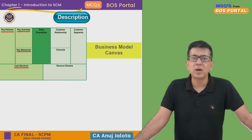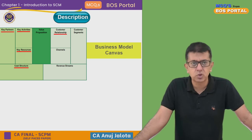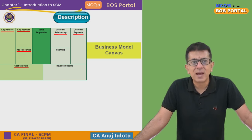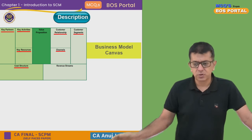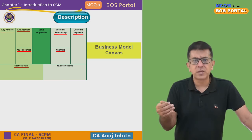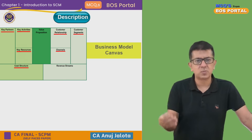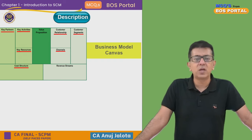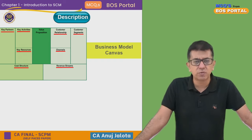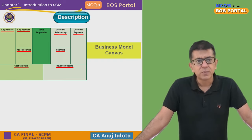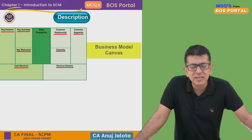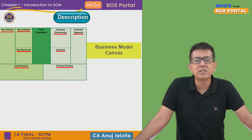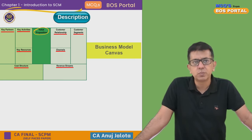On the right-hand side, you have things from the market outlook: customer relationships, customer segments, your channels — where do you sell, wholesale customers, retail customers, and so on. Apart from that, there are your revenue streams — from where do you get the money. And between the left and right-hand side, in the middle, is something very important: that is Value Proposition.